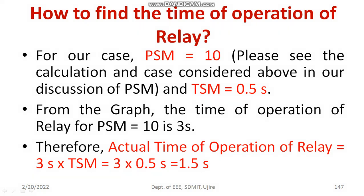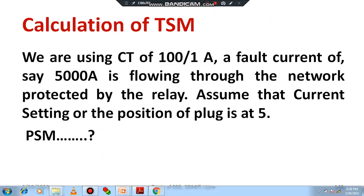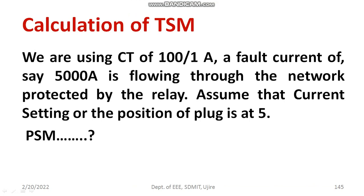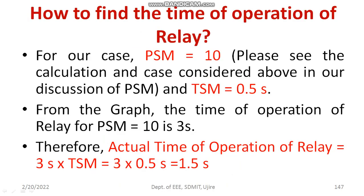To summarize the method: TSM is a setting you configure as a user. PS is also your choice — we set it as 5. CT ratio and fault current are given. First, compute PSM. Corresponding to that PSM, calculate the operating time from the graph. Once you get the operating time, multiply it with TSM to get the actual operation time of the relay — in this case, 1.5 seconds.